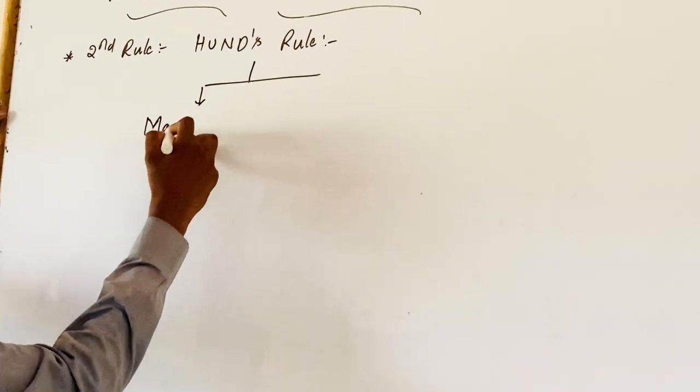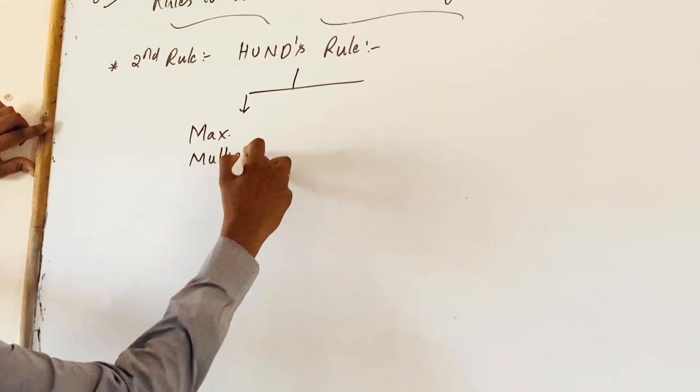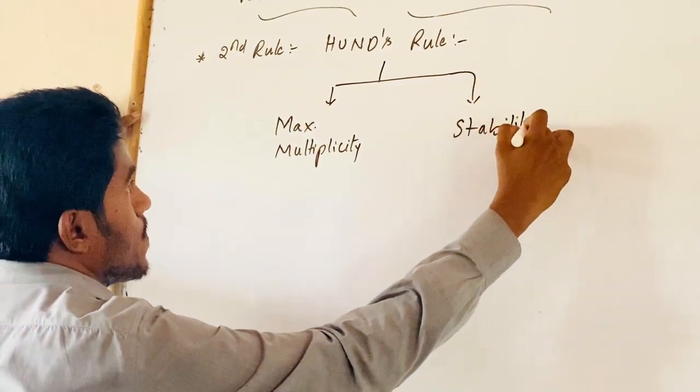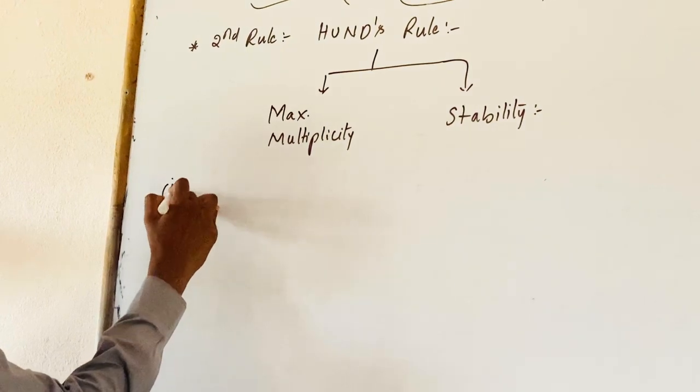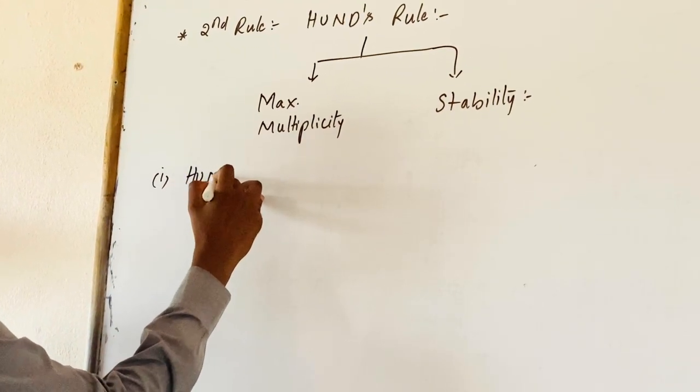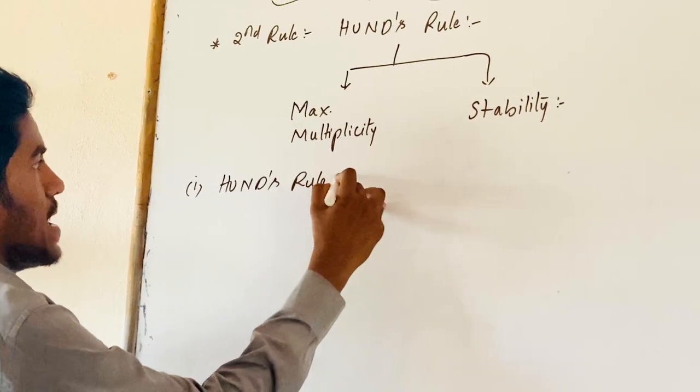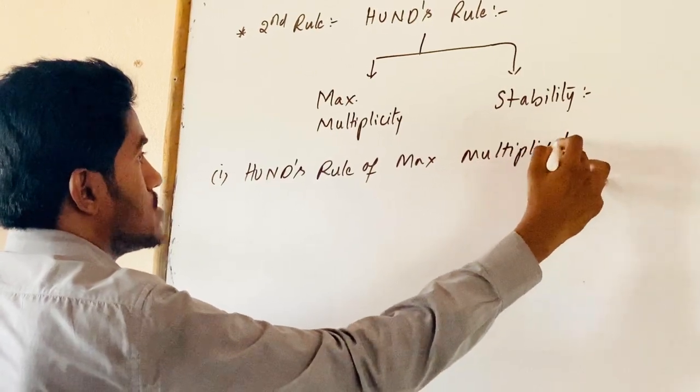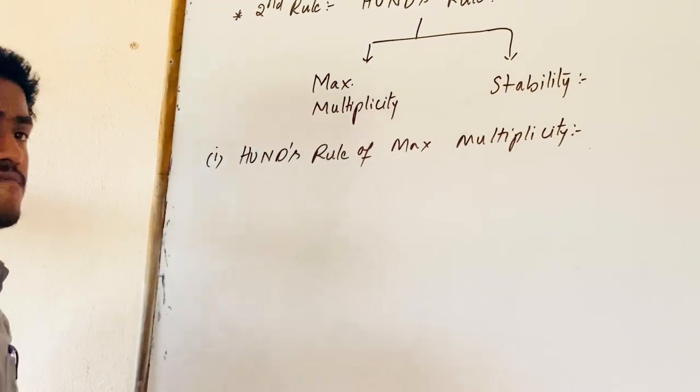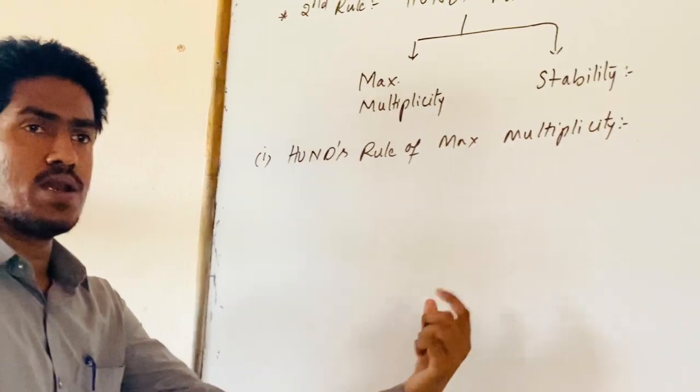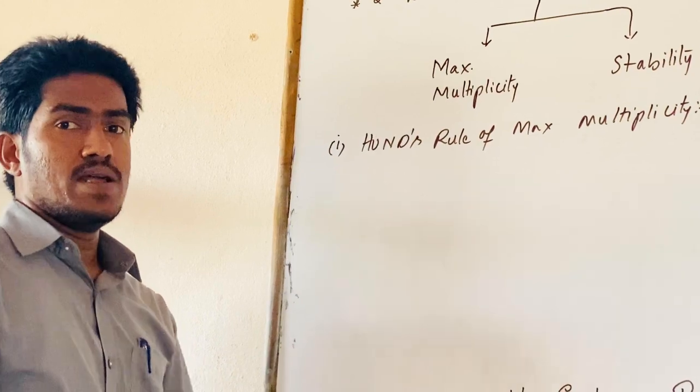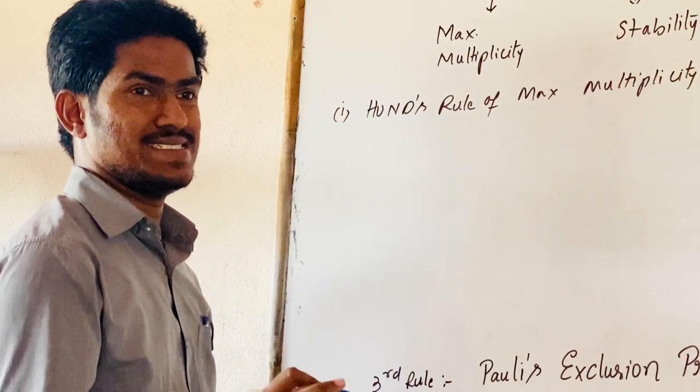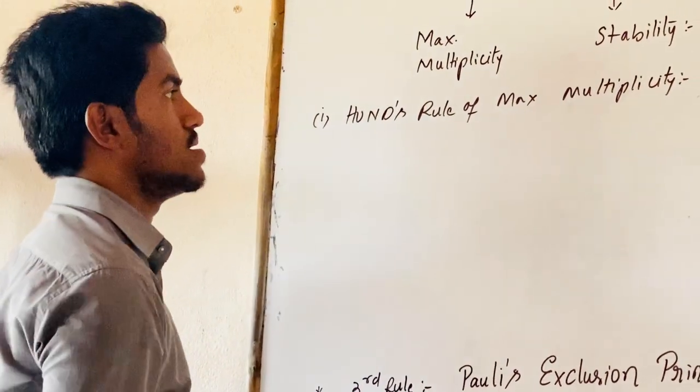Hund's rule of maximum multiplicity and Hund's rule of stability. Hund's rule of maximum multiplicity states that the pairing of electrons is possible after the half filling of available degenerate orbitals. What is the definition of degenerate orbital? The orbitals that can have same L-value, same L-value and same energy.